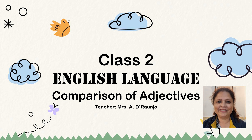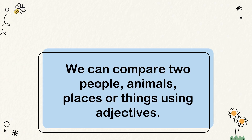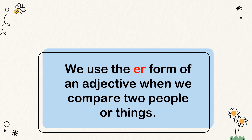Class 2 English Language: Comparison of Adjectives. Today, children, we will learn how adjectives are used for comparison. We can compare two people, animals, places, or things using adjectives. We use the ER form of an adjective when we compare two people or things.